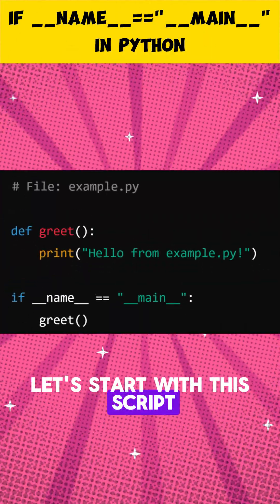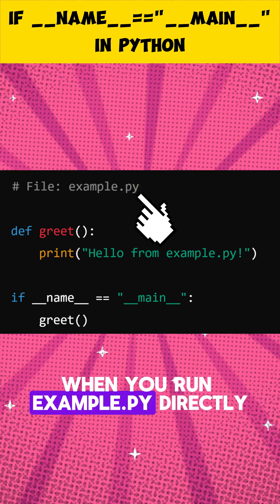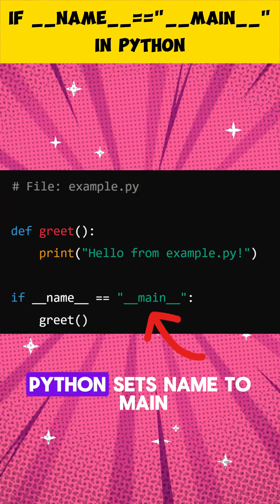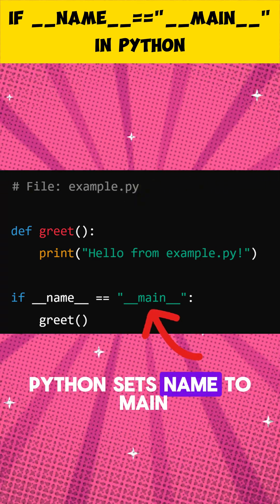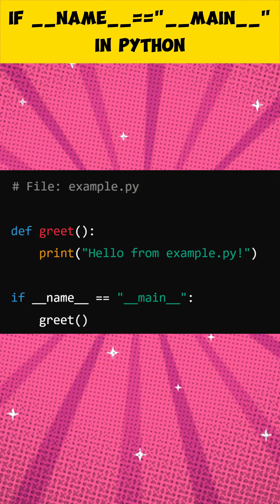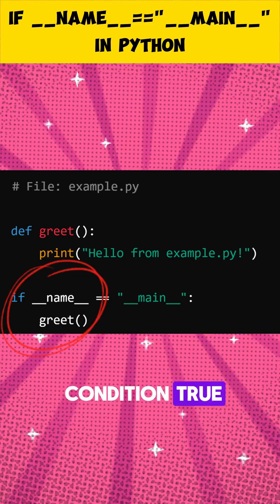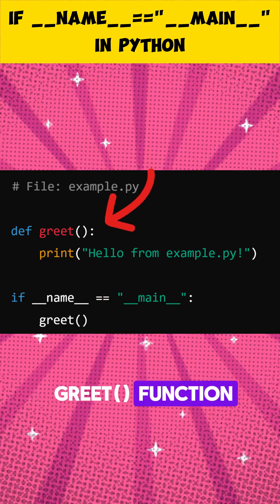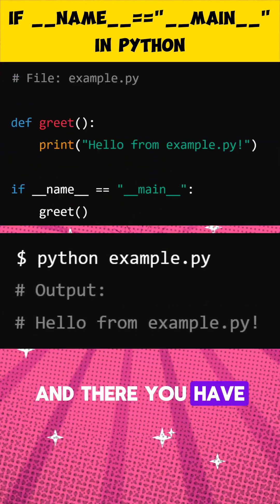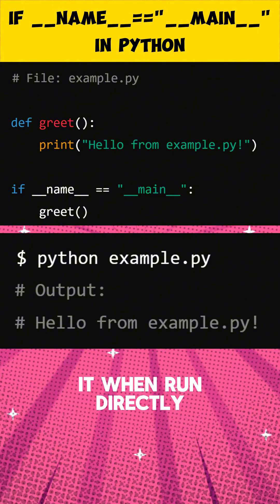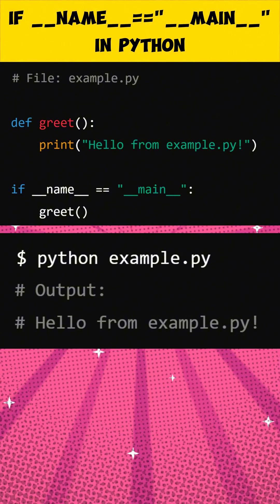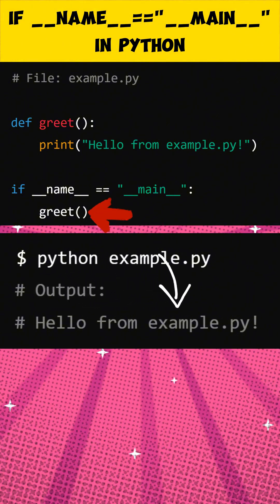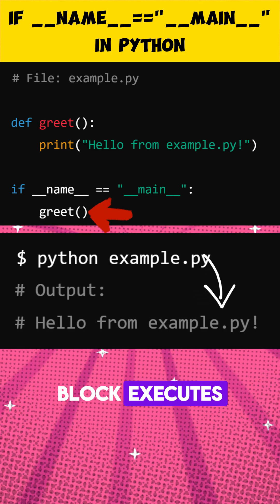Let's start with this script. When you run example.py directly, Python sets __name__ to __main__. This makes the if condition true, so it executes the greet function. When run directly, the code inside the if __name__ == __main__ block executes.